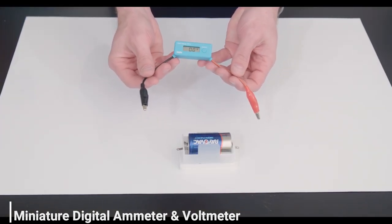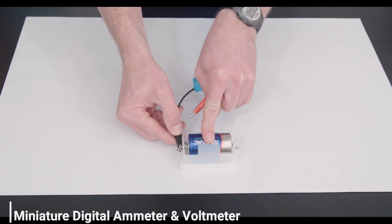This blue circuit element is called a voltmeter. It measures voltage. Let me show you.